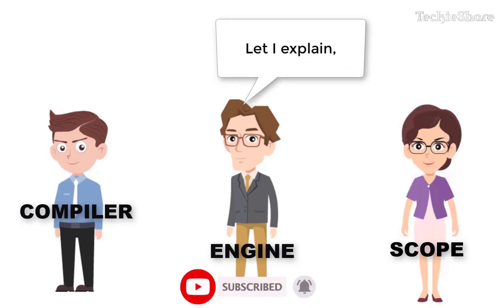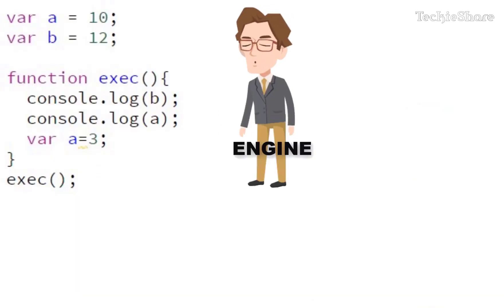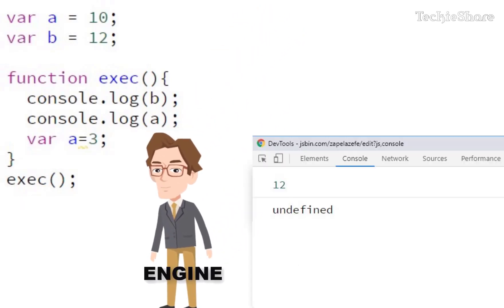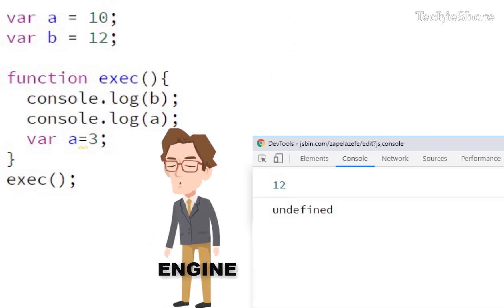Let me explain how we work together. This is the function. Let me show you how we are executing this code. The output of this code will be 12 and undefined. Let me explain how this 12 and undefined comes.